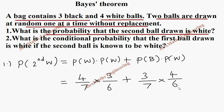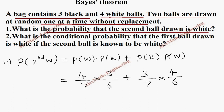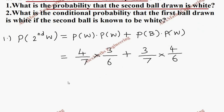For the second case, getting black first is 3/7. Then getting white second is still 4/6 because all four whites remain — only the black count reduces by one, so the total decreases by one but white stays the same. That gives 3/7 × 4/6, which is 12/42.